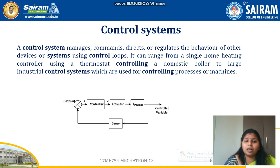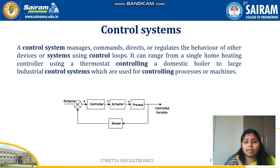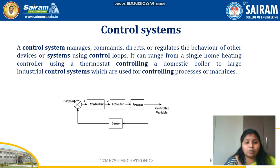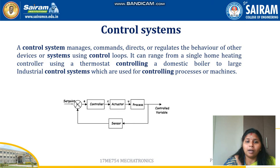Now here we will be seeing about control systems. This is also one of the classifications of a system, which manages commands and directs and regulates the behavior of devices using control loops. It can range from a single home heating controller using a thermostat controlling a domestic boiler to large industrial control systems used for controlling processes or machines. There is a wide variety of control systems ranging from household to industrial purposes.